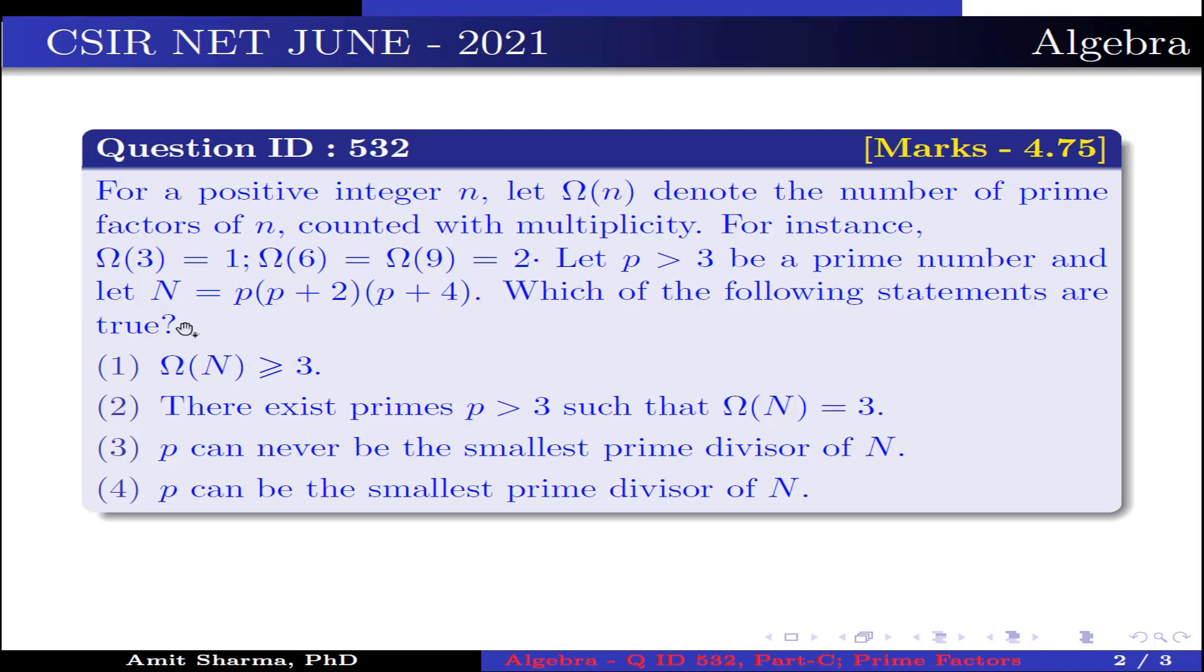Which of the following statements are true? Option 1: Ω(N) ≥ 3. Option 2: There exist primes p > 3 such that Ω(N) = 3. Option 3: p can never be the smallest prime divisor of N. Option 4: p can be the smallest prime divisor of N.